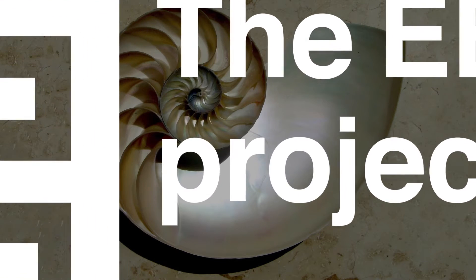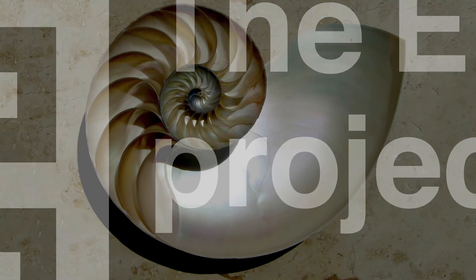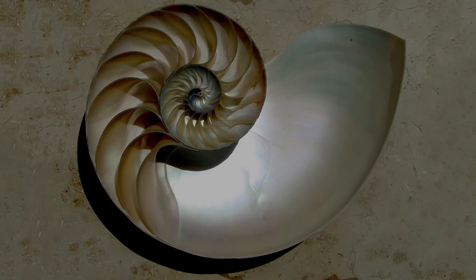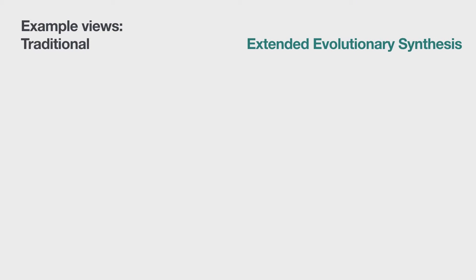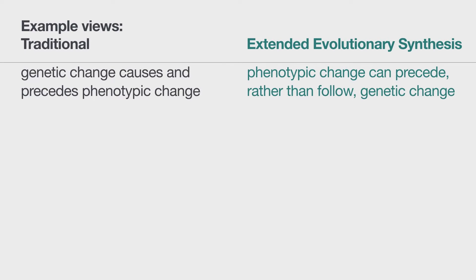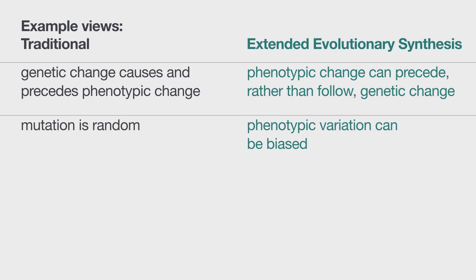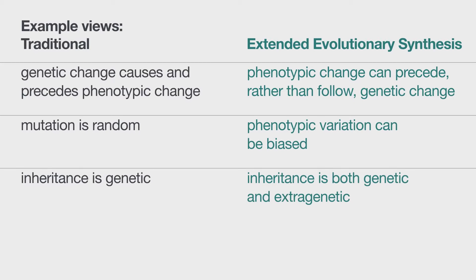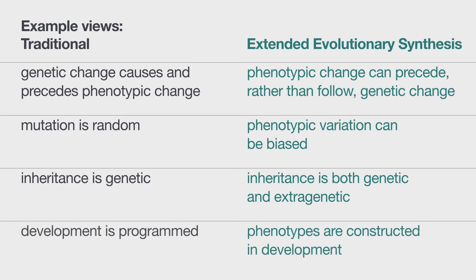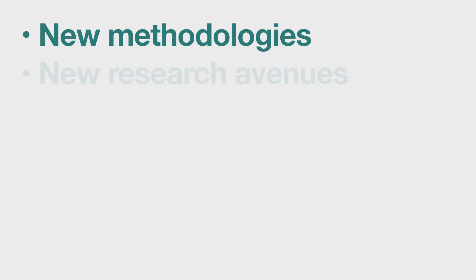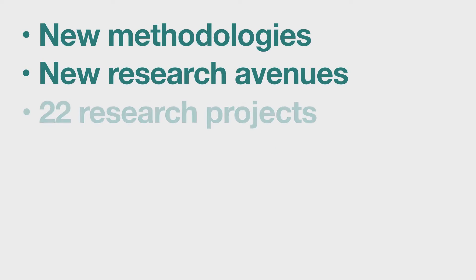Putting the extended evolutionary synthesis to the test is a research programme comprising 22 research projects. The guiding principles for the 22 projects are to identify conceptual differences between traditional and alternative interpretations of the evolutionary process. This enables us to develop theory that fills the gaps in contemporary understanding, and to devise key projects that provide critical tests of points of contention. We're also developing new methodologies and research avenues motivated by the extended evolutionary synthesis.